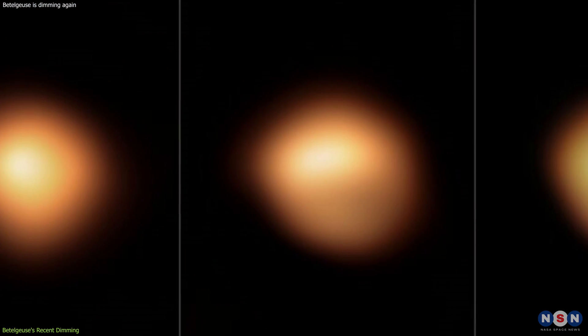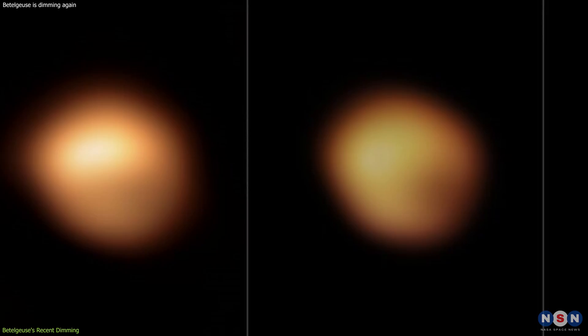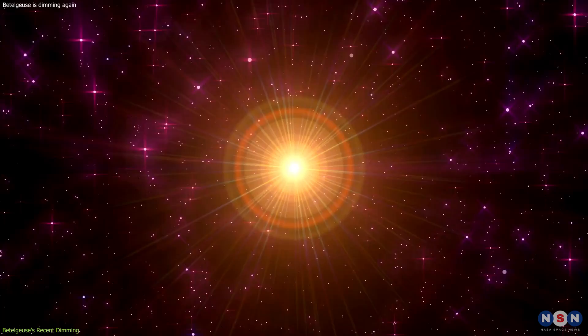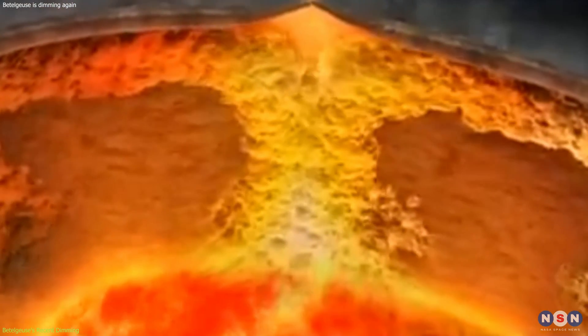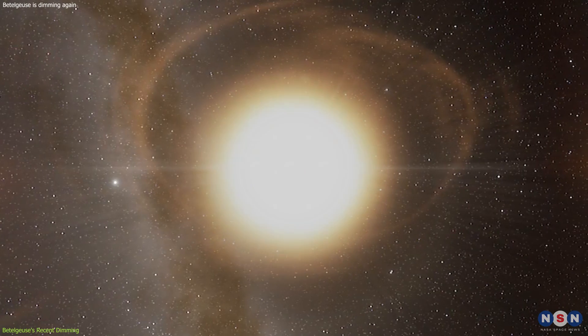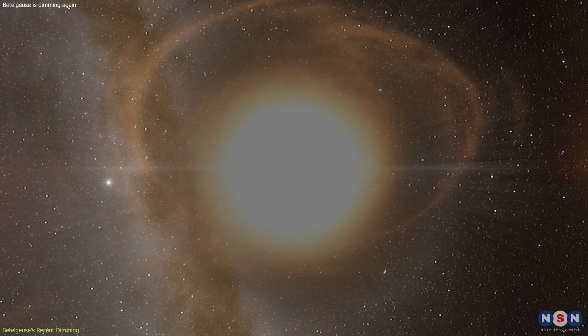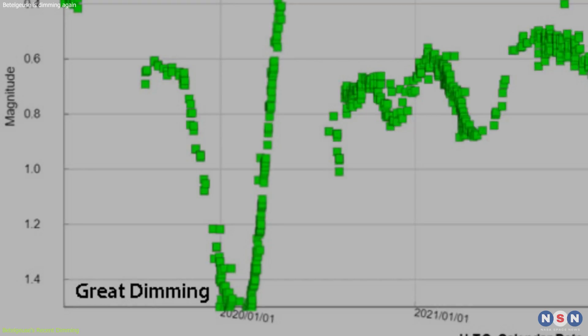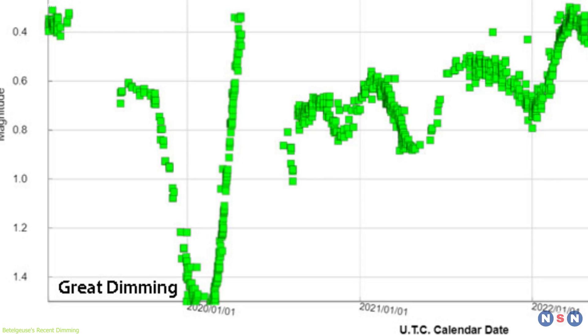As a variable star, Betelgeuse is known for its fluctuating brightness. These changes are typically attributed to the star's pulsations and the movement of large convective cells on its surface. However, the recent dimming has been more pronounced than usual, leading to questions about whether we are witnessing another great dimming, akin to the one observed in 2019 to 2020.